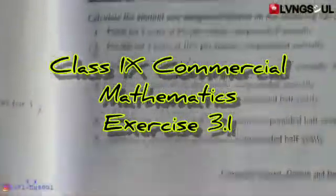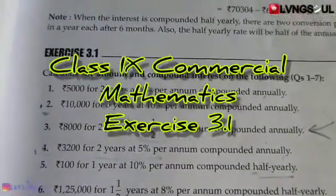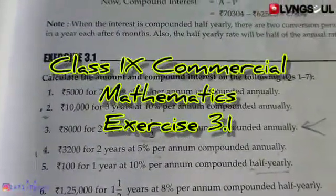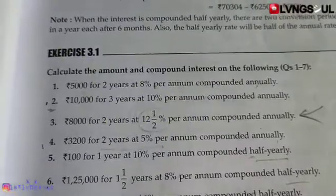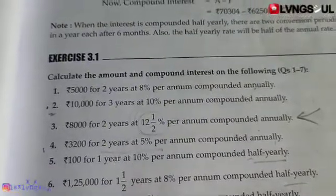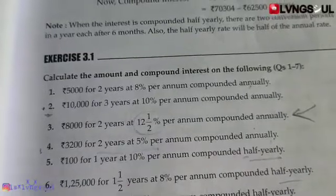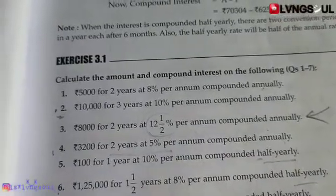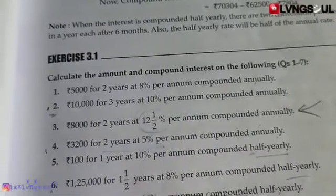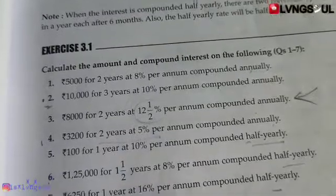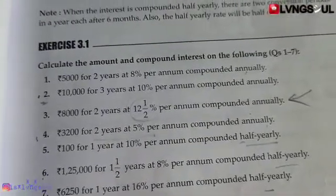Last night in Commercial Mathematics Exercise 3.1. Question number 1 is that 2 years, 8%. Question number 2 is that 3 years, 10%.